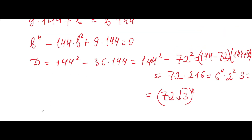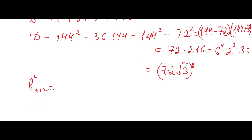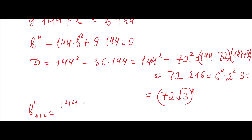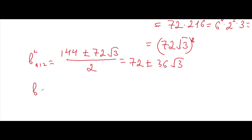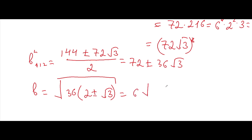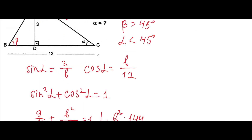So B squared will have two solutions: B squared equals (144 plus or minus 72 square root of 3) over 2, which equals 72 plus or minus 36 square root of 3. Therefore B equals the square root of 36 times (2 plus or minus square root of 3), which equals 6 times the square root of (2 plus or minus square root of 3). Since a side length cannot be negative, we take the positive root.